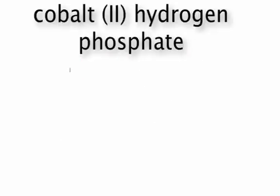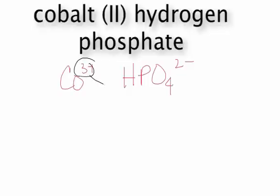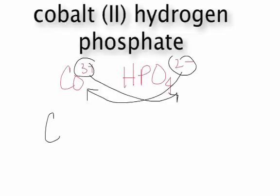Let's try cobalt(III) hydrogen phosphate. Cobalt(III) is Co^3+. Hydrogen phosphate is HPO4^2-. So what we're doing before is take this and put it down there, take this and put it down there. So you got Co2(HPO4)3. That is cobalt hydrogen phosphate.